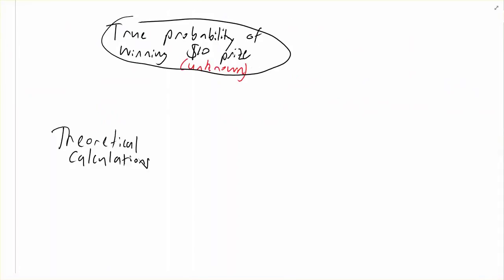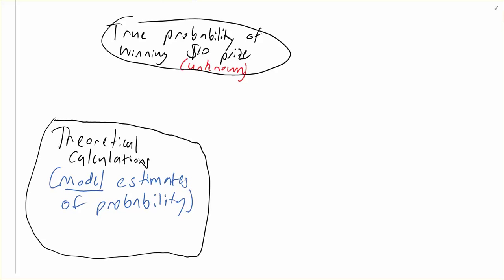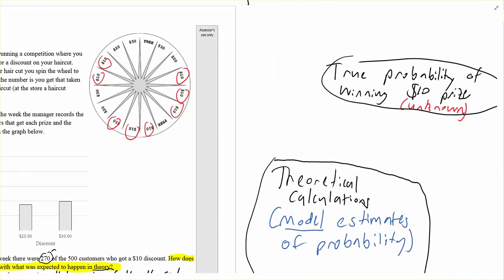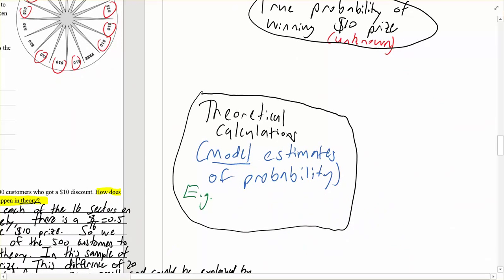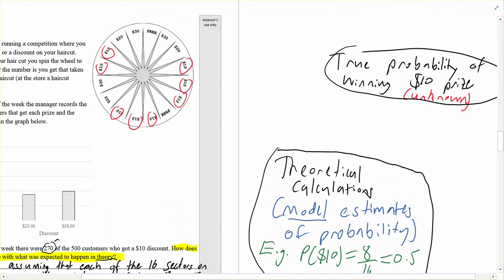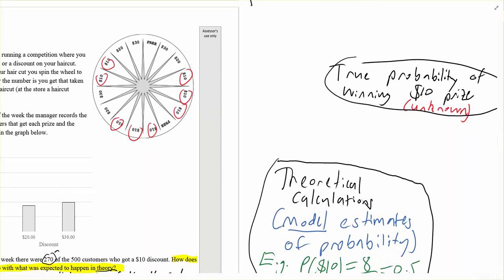One is theoretical calculations, which we sometimes call model estimates. Here our model estimate was the one where we calculated a 50% chance of getting a $10 prize because 8 out of the 16 sectors had $10 on them. And that assumed something — it assumed that the wheel was equally likely to stop spinning on each of those 16 sectors, so therefore if half of the sectors had $10, half the time you win $10.